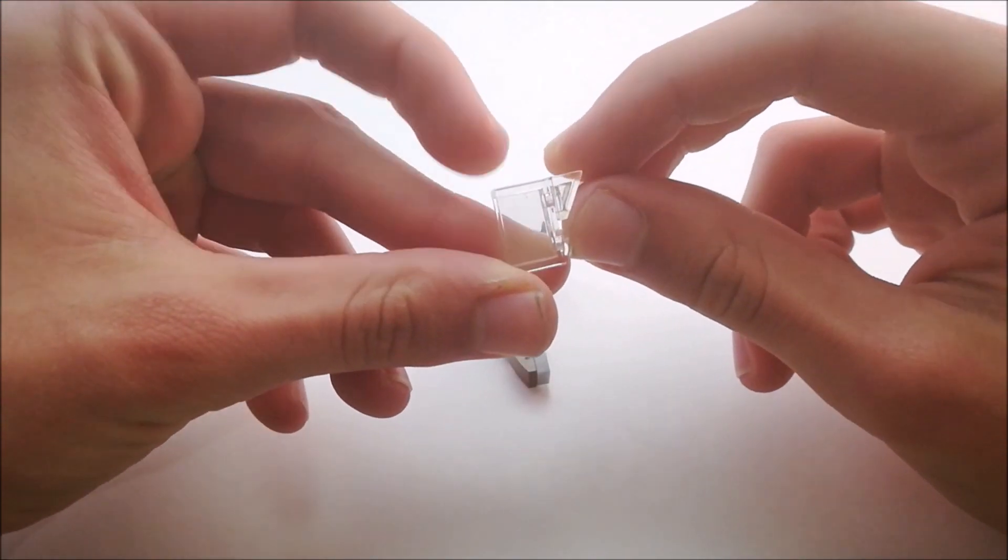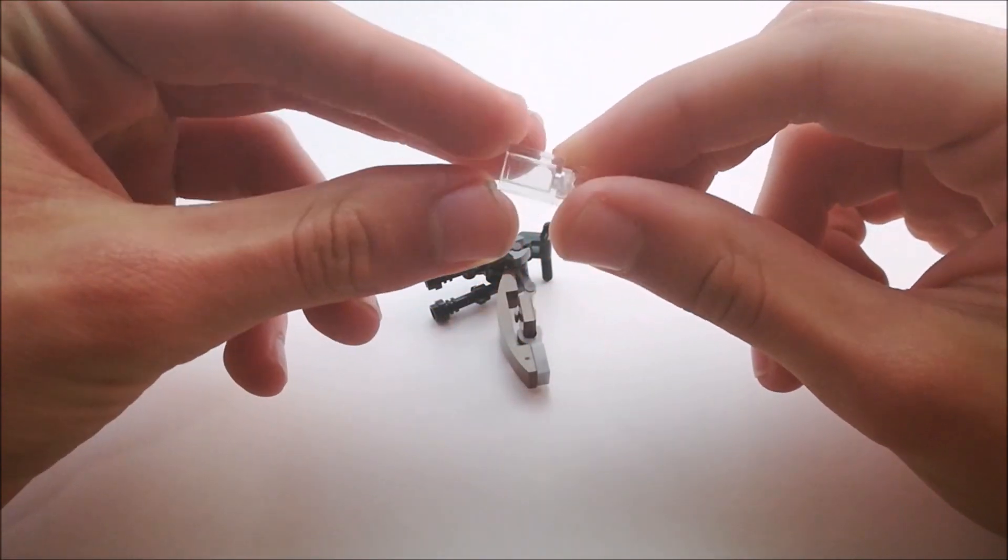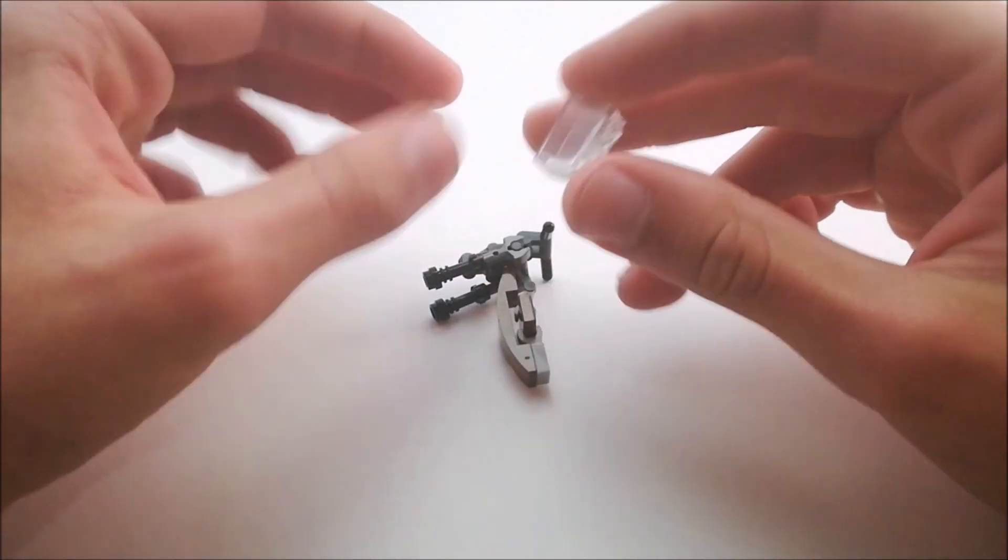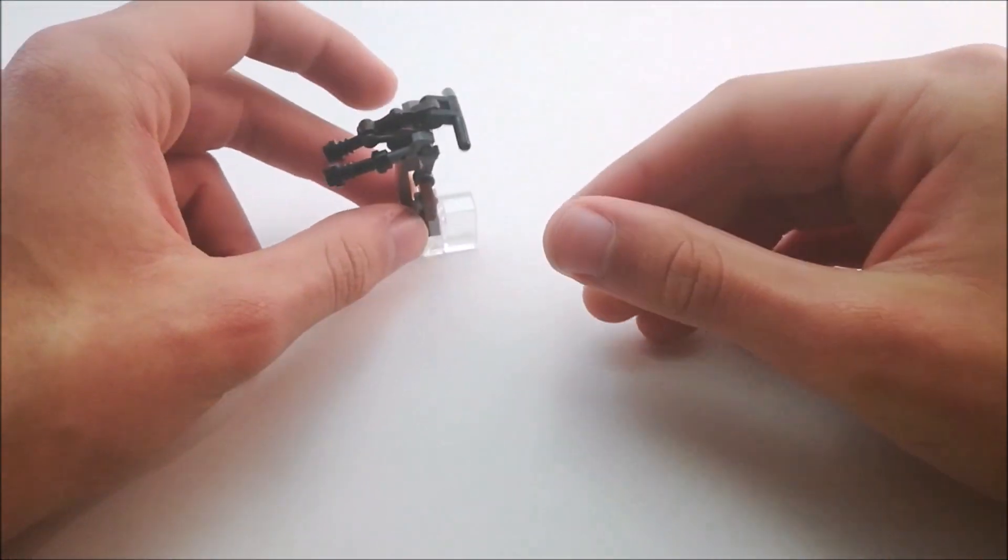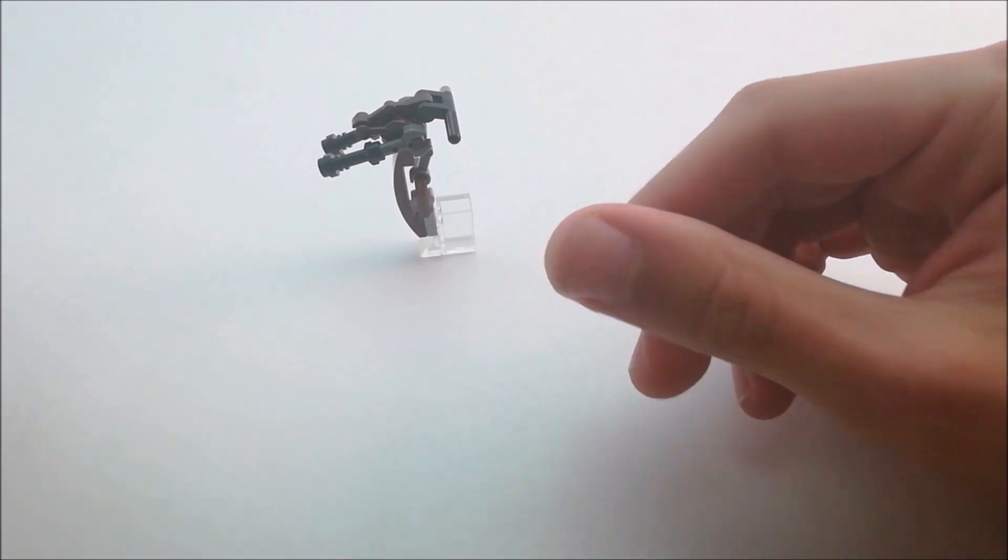Then we have the stand. This is a 1x2 clear brick and a 1x1 cheese slope that just connects to the bottom. It should be fairly easy to stand up and look like it's flying.